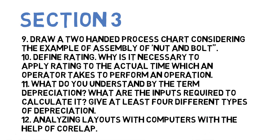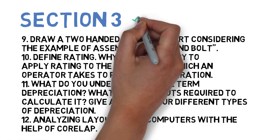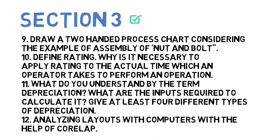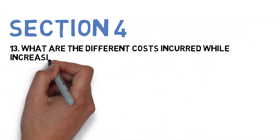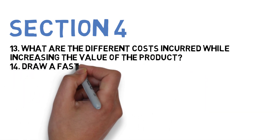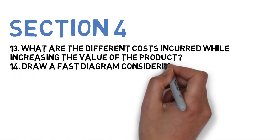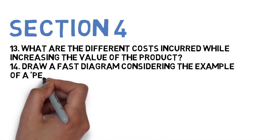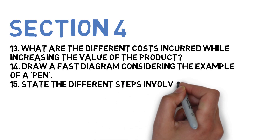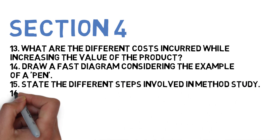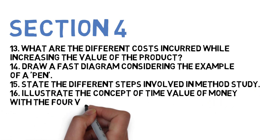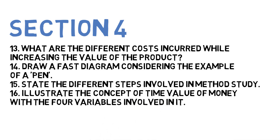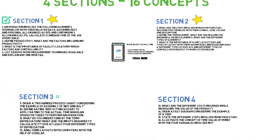Section four. First: what are the different costs involved while increasing the value of the product. Second: draw a FAST diagram considering the example of a pen. Third: state the different types of steps involved in method study. Fourth: illustrate the concept of time value of money with the four variables involved in it.